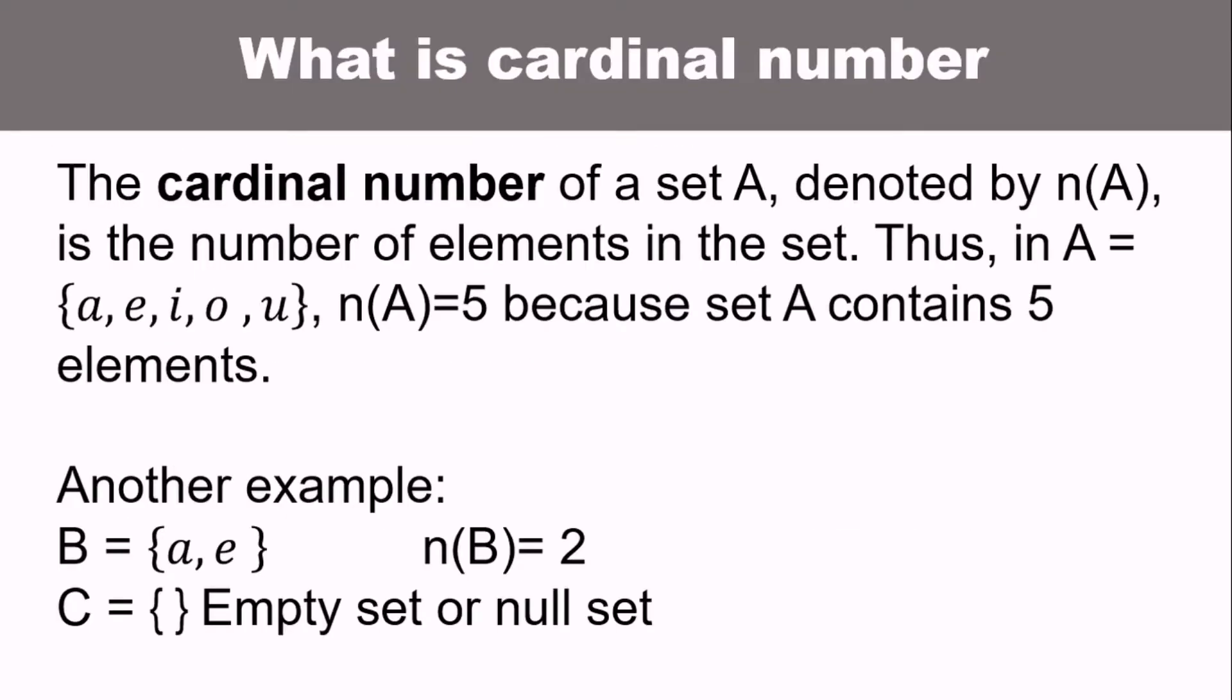So what is cardinal number? Cardinal number of a set A, denoted by n(A), is the number of elements in the set. Thus, in set A with elements a, e, i, o, u, n(A) or the cardinal number is 5 because set A contains 5 elements.